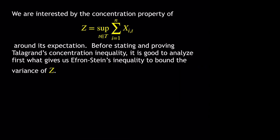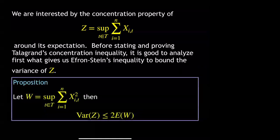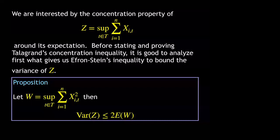Before proving the exponential sub-Gaussian inequality, it is interesting to see what Efron-Stein gives to bound the variance of Z, because it will give us information about the sensitive quantities to look at. We see that the variance of Z is less than two times the expectation of W, where W is the supremum of the sum of x_i(t) squared.